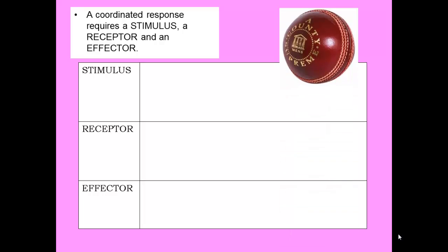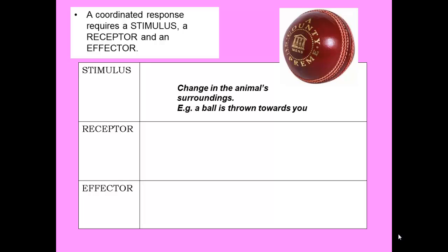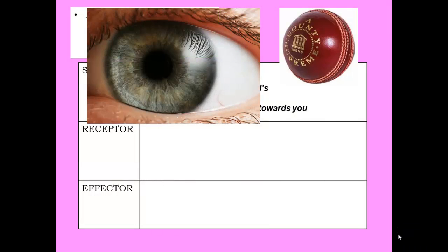Let's say a cricket ball is thrown towards you, moving at quite a pace. You know it's going to hurt if you get it wrong because it's a pretty hard ball, and if it smashes you in the face, you want to avoid that. Our stimulus here is a change in our surroundings — in this example, a ball being thrown towards us. Our receptor is the eye, which picks up light reflected off the ball and detects that light.